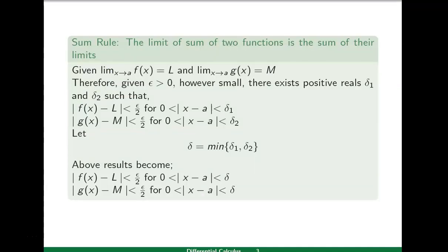The sum rule states that the limit of the sum of two functions is the sum of their limits. We are given that limit x approaches to a of f(x) is l. By the epsilon-delta definition of limit, for the first function f(x), there exists a positive real delta-one depending upon epsilon such that |f(x)−l| is less than epsilon/2 for zero less than |x−a| less than delta-one.